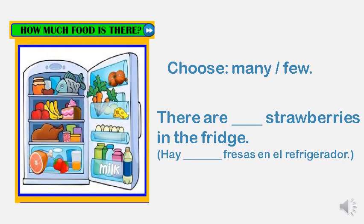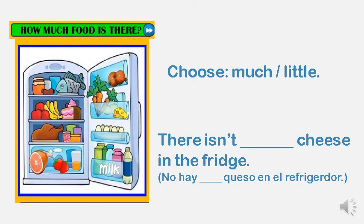Let's choose many or few. Many — there are strawberries in the fridge. That is correct — few. There are few strawberries in the fridge. Choose much or little. There isn't much cheese in the fridge. Correct! There isn't much cheese in the fridge.